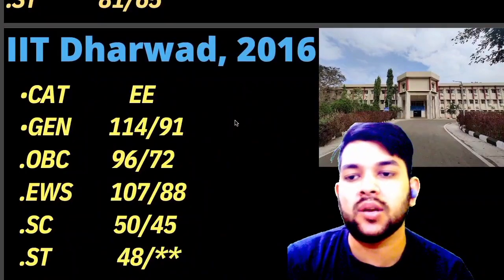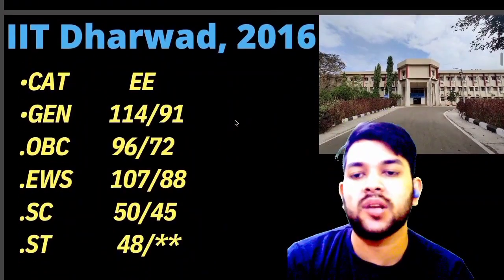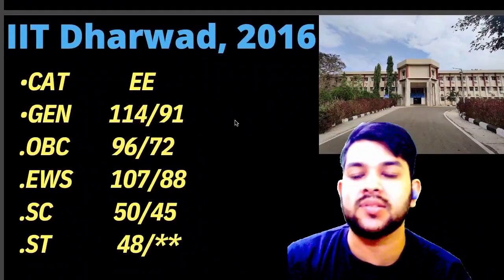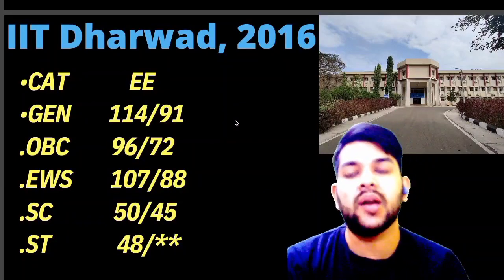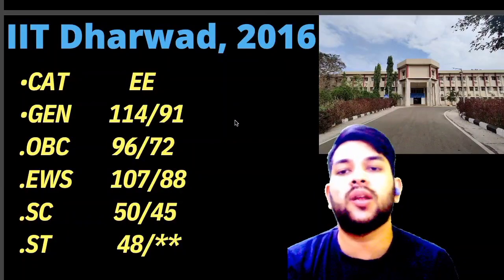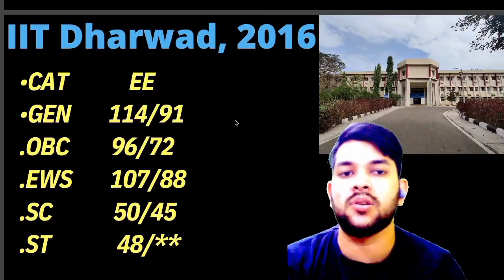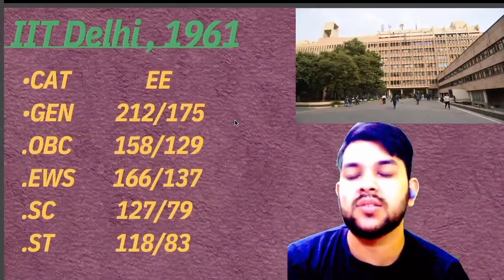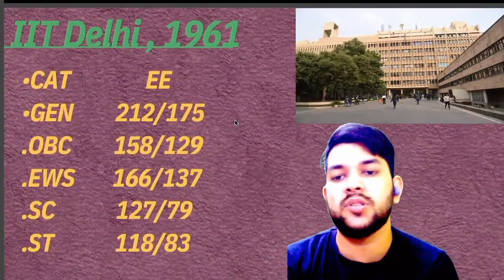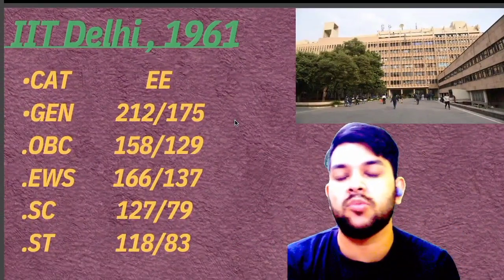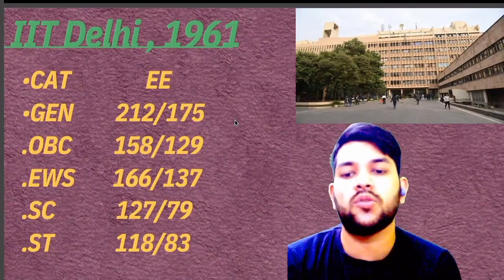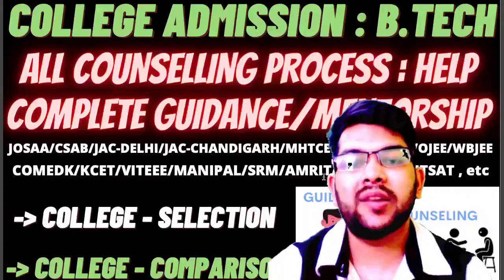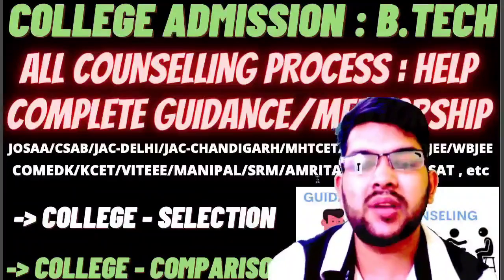For IIT Dharwad: General 114, OBC 96, EWS 107, SC 50, ST 48 marks — I am talking about electrical engineering or electronics engineering. For IIT Delhi: General 112, OBC 158, EWS 166, SC 127, ST 118 marks required.